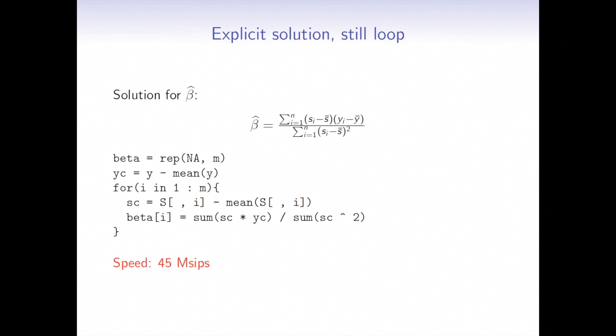And now for a simple regression model, we know that the explicit solution for the beta is very simple. And we can actually compute it ourselves without using any ready function to fit the linear regression model. So here I do the same story, just in a loop, one SNP at a time, I'm just calculating my beta myself.